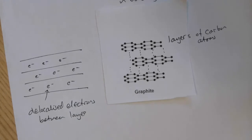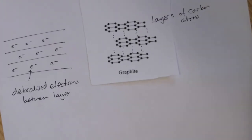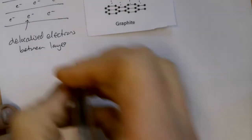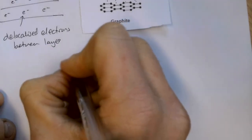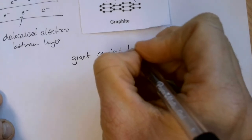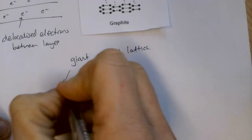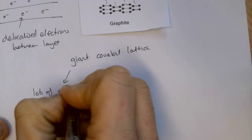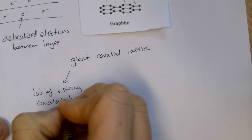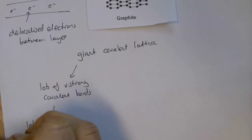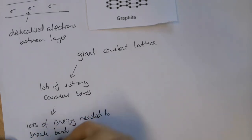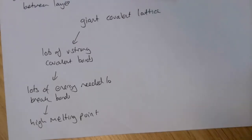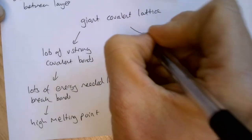What we need to think about is what this structure means in terms of the properties of graphite. Again, it is a giant covalent lattice with lots of very strong covalent bonds. As a result of those very strong covalent bonds, lots of energy is needed to break them, and as a result we get a very high melting point — not quite as high as diamond, but still very high.